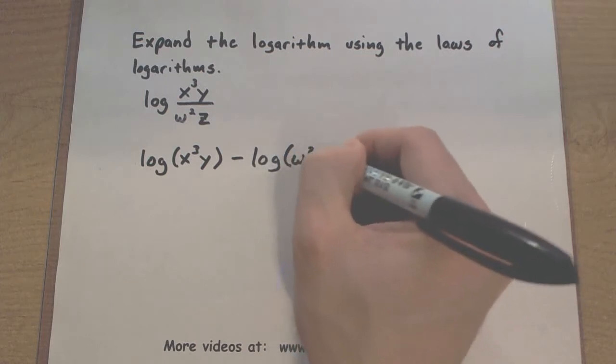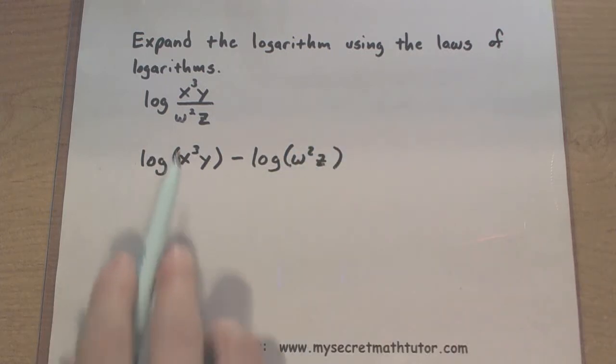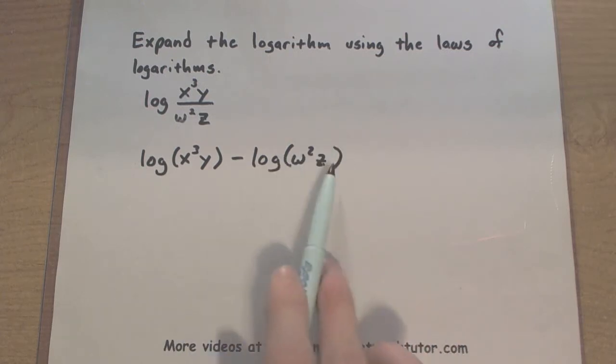Really take note as to what I'm putting inside. So this first log contains everything I was in the top of my fraction. The second log contains everything that was in the bottom. Alright, things are looking pretty good.